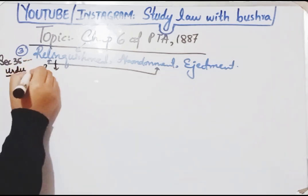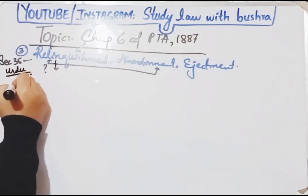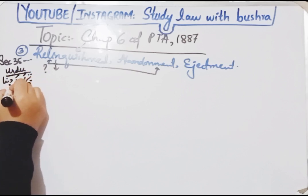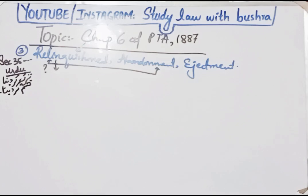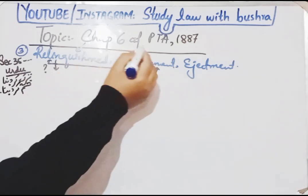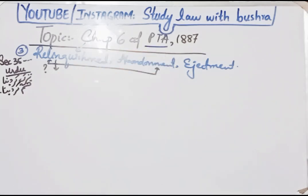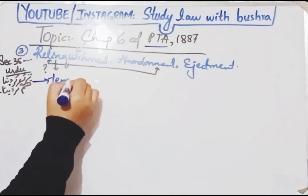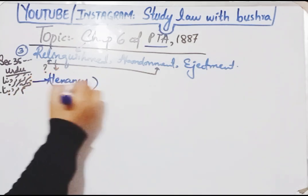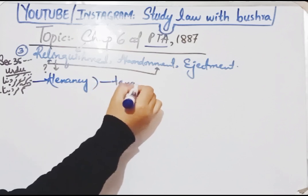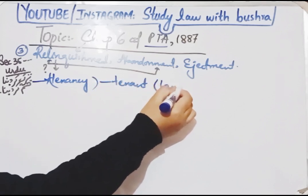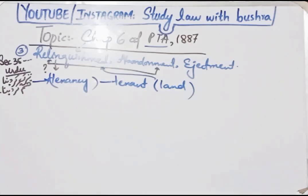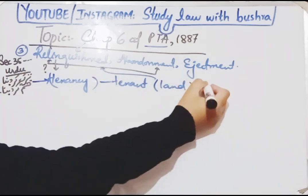Relinquishment ka matlab kya hai? Urdu mein relinquish ka matlab hai tark kar dena, khatam kar dena. Yahan par baat ki gayi hai relinquishment of the tenancy — ke tenancy ko kis tarah se tark kiya jayega. Ek tenant apni tenancy ke contract ko kis tarah se relinquish karega, jo zameen usne landlord se li hai usko kis tarah se tark karega.